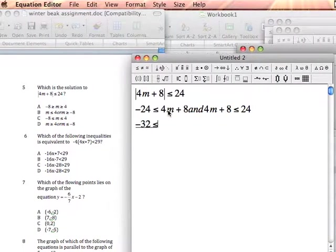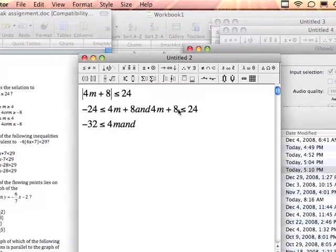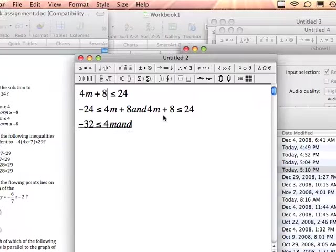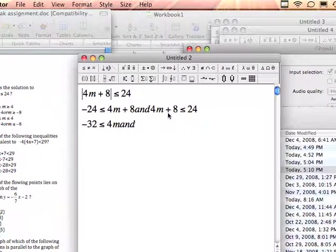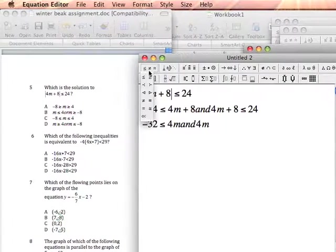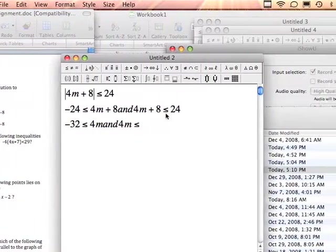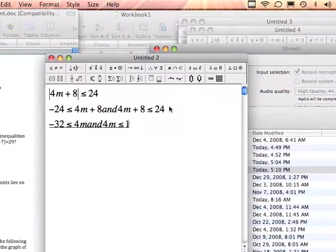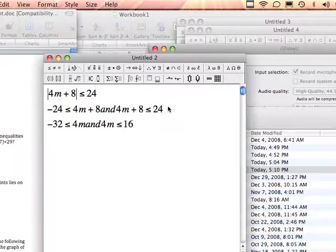Still keep the word 'and' because I'm joining the two together later. In this case I'm subtracting 8 from both sides of this inequality, so 8 minus 8 would be 0. The only thing I'll be left with is 4m, and the inequality sign stays the same, and I'm still going to have 24 minus 8, which is 16.